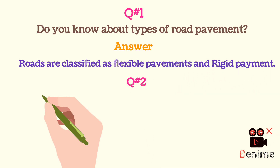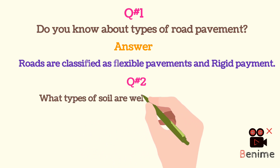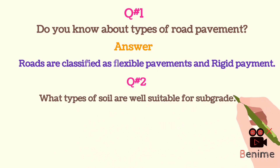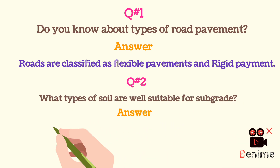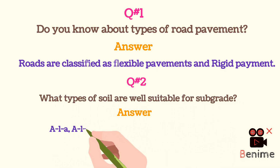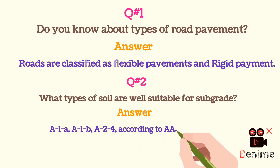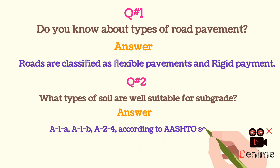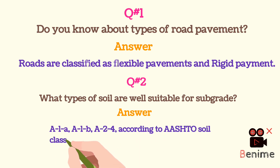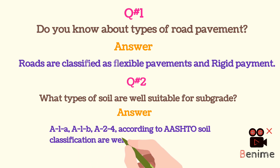Question 2: What types of soil are well suitable for subgrade? A1-A, A1-B, and A2-4 according to AASHTO soil classification are well suitable for subgrade.